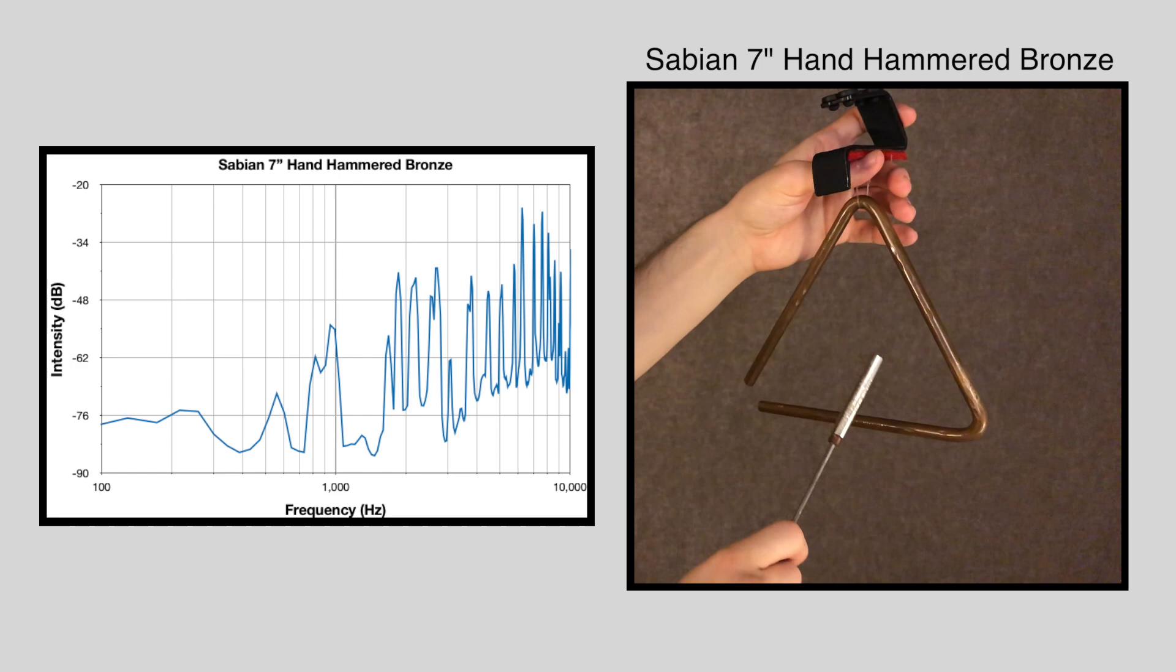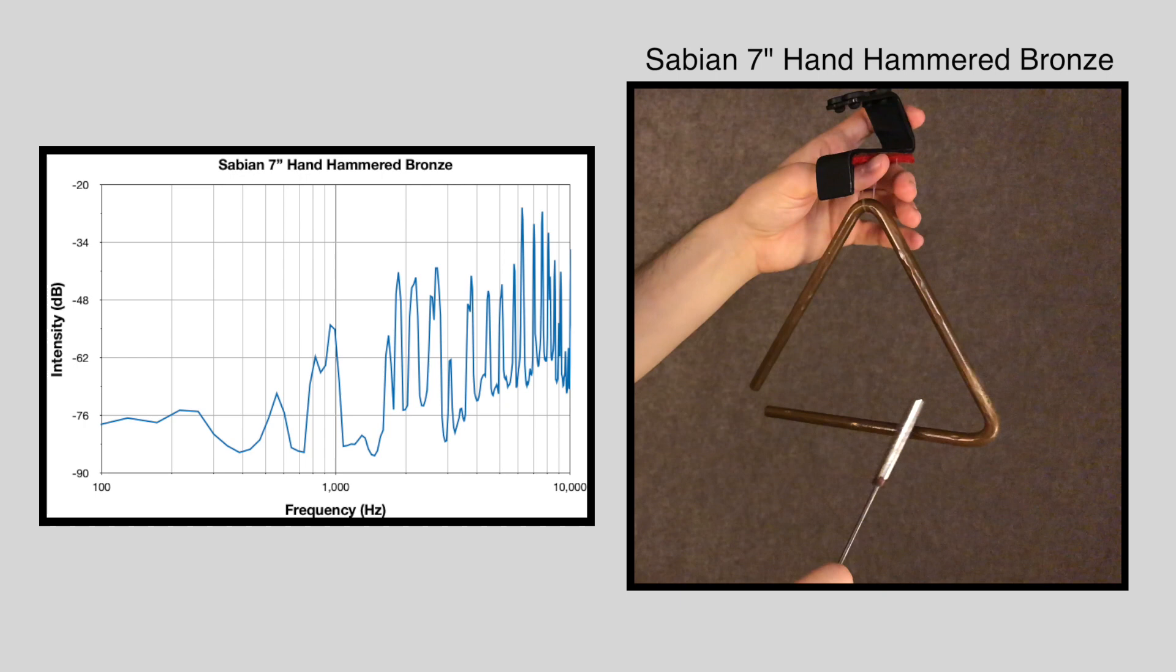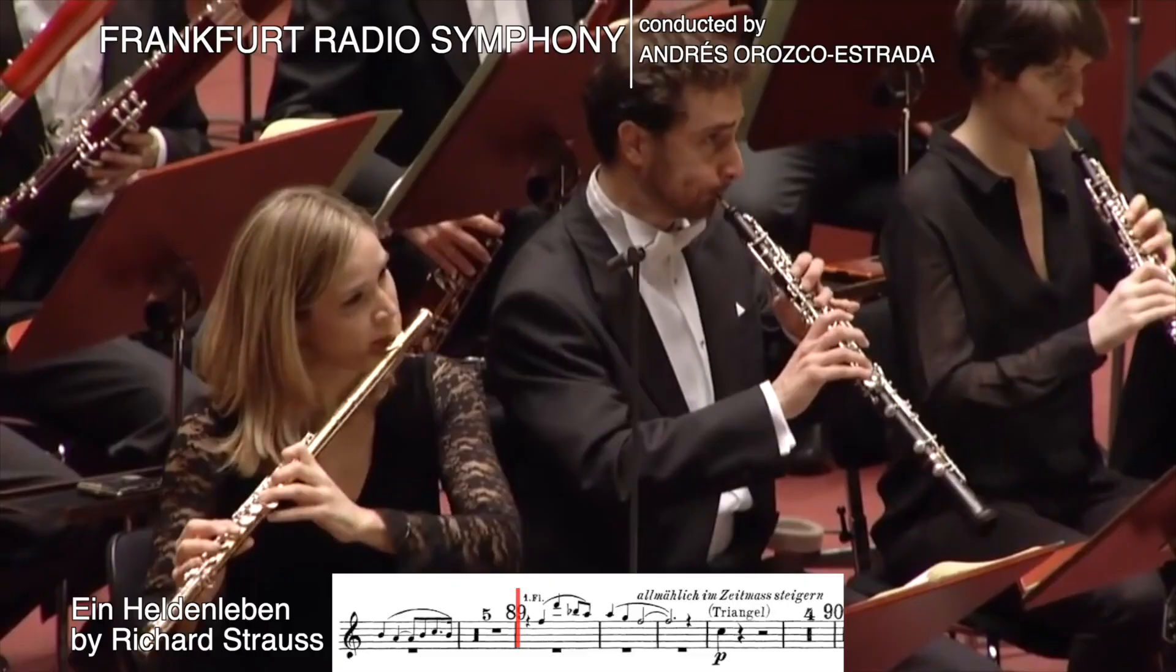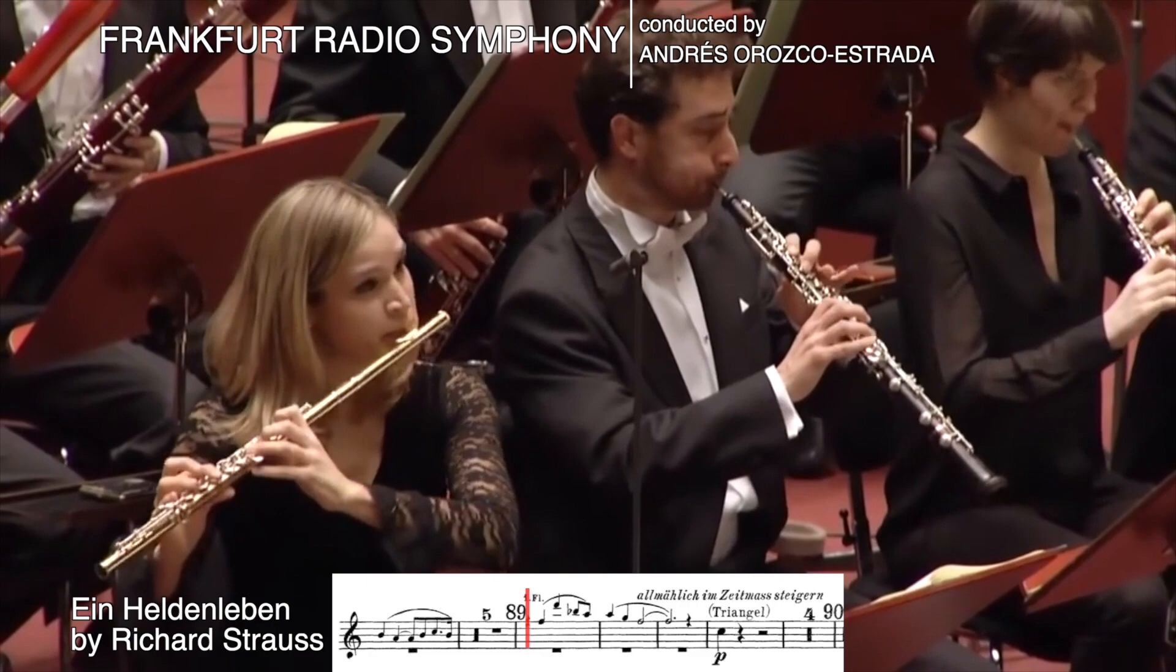This will all make more sense when we start comparing instruments. Here's what the first one, a Sabian 7-inch hand-hammered bronze triangle, sounds like. This instrument specifically is a bit more shimmery than other triangles, and we see plenty of spikes in the high frequencies. It also has a strong representation of both mid and low frequencies. Among other things, I love using it for single notes in solo moments of rich-sounding large orchestral works like Richard Strauss's Ein Heldenleben.